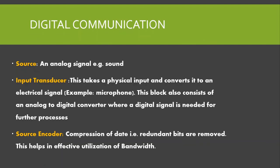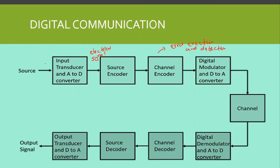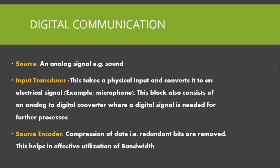To revise: first we have a source — our analog signal, for example sound. Next is the input transducer and A-to-D converter, which takes a physical input and converts it to an electrical signal. An example of an input transducer is a microphone. This block also includes an analog-to-digital converter where a digital signal is needed for further processing — converting the physical sound signal into an electrical and then digital signal.